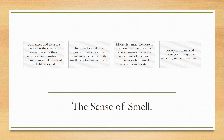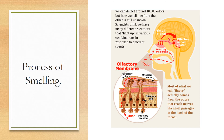To smell, gaseous molecules must come into contact with smell receptors in your nose. Molecules enter the nose as vapors and reach a special membrane in the upper part of the nasal passages where smell receptors are located. These receptors send messages through the olfactory nerve to the brain. We can detect around 10,000 odors, but how we tell one from another is still unknown — scientists think we may have different receptors that activate in various combinations.